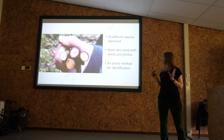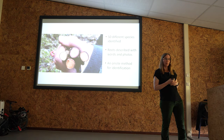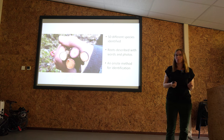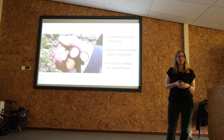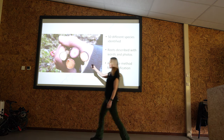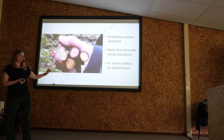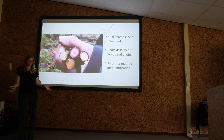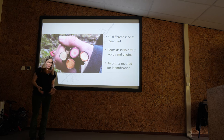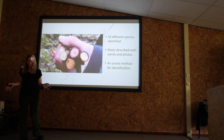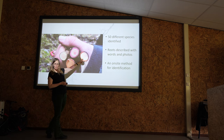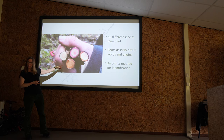We have focused mostly on photos because we wanted something easy and accessible to use outside. We made a very easy method for identification on site. Here you see four different species, and this was the first time we actually had four different species at the same time — isn't it quite amazing that they are so different? Actually it's not rocket science — leaves are different, bark is different, so why should roots be similar? They're not.